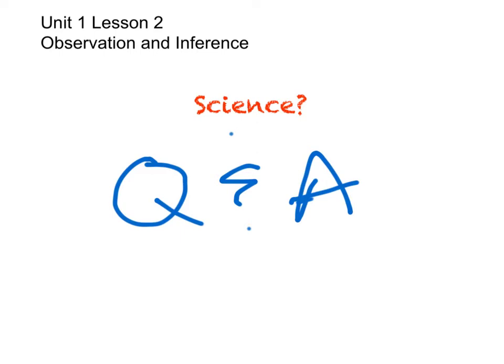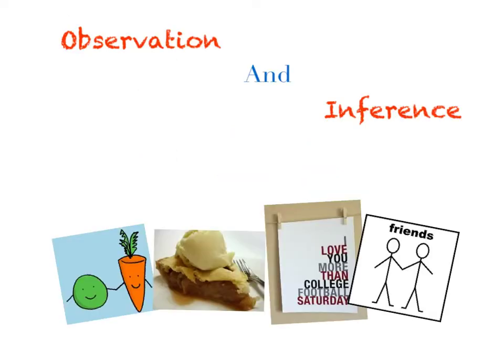Those two practices are observation and inference. Two practices that go together like peas and carrots, apple pie and ice cream, college football Saturdays, and these two friends holding hands — Tim and Eric. They're kind of like two peas in a pod. You really cannot have one without the other.